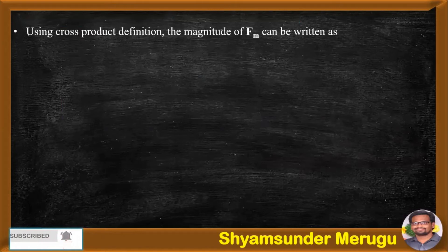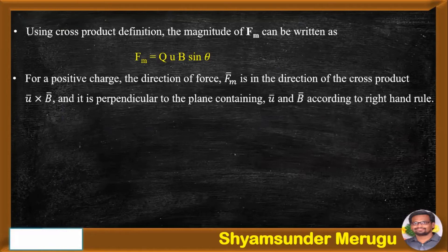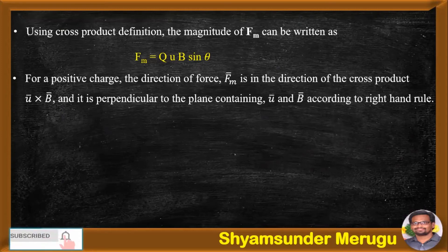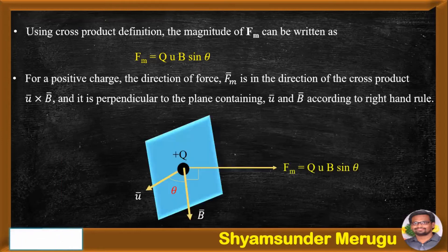Using the cross product definition, the magnitude of Fm bar can be written as Fm equals QUB sin theta. For a positive charge, the direction of Fm bar is in the direction of the cross product U bar cross B bar, and it is perpendicular to the plane containing U bar and B bar according to the right-hand rule. And this is shown in the given figure.